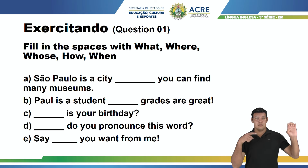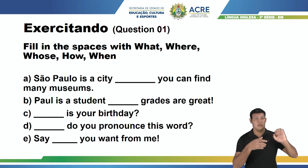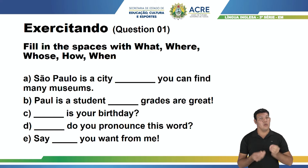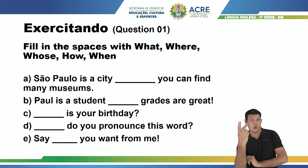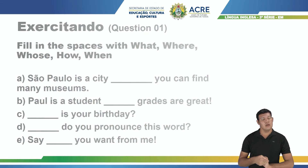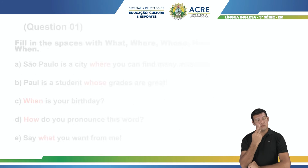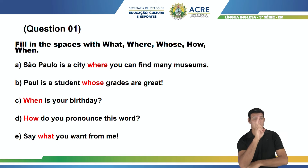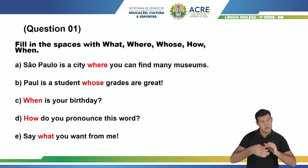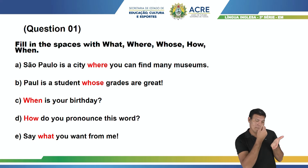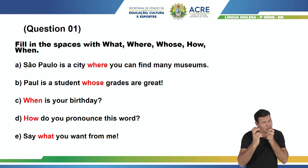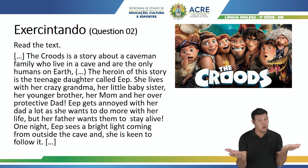And the last one — e o último, letter E. O que sobrou foi what. Say what you want from me. Diga o que você quer de mim. Confiram aí as respostas corretas, façam suas anotações e vejam se vocês escreveram direitinho.